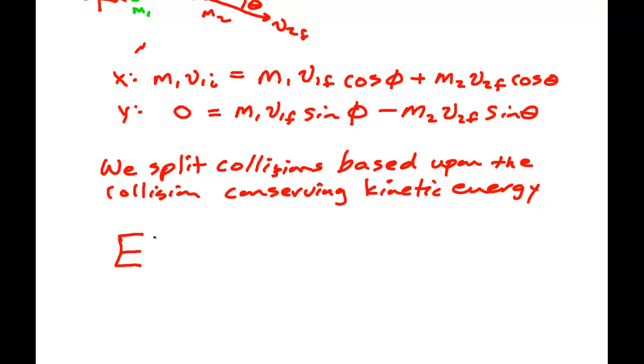One collision type is called elastic collisions. Elastic collisions have kinetic energy conserved. So if you can use conservation of energy as well, that is the material in chapter six to solve problems, because the work by non-conservative forces was zero, then that type of collision is called an elastic collision.